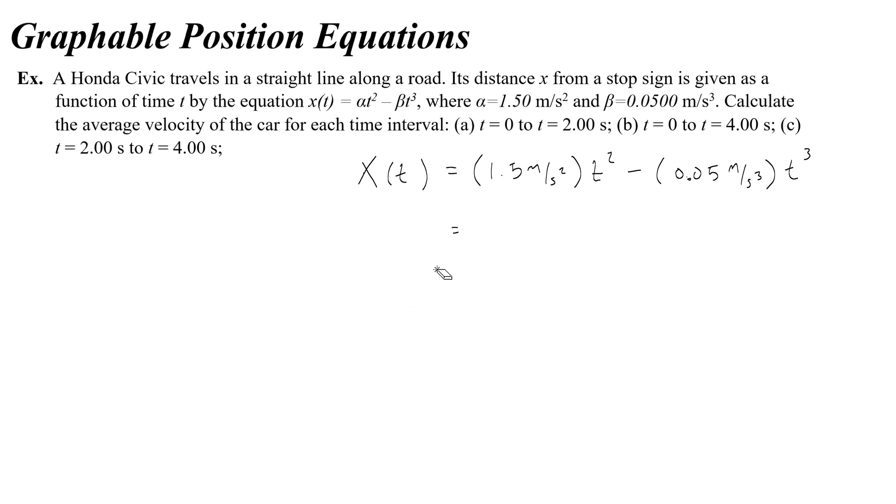So let's do two seconds. When I plug in two seconds I'm going to have 1.5 meters per second squared and I'm going to put in two seconds, that gets squared, minus 0.05 meters per second cubed times two seconds the whole thing cubed.